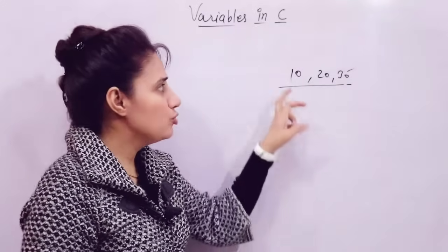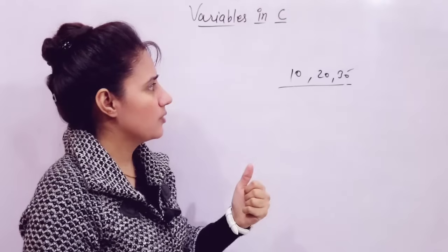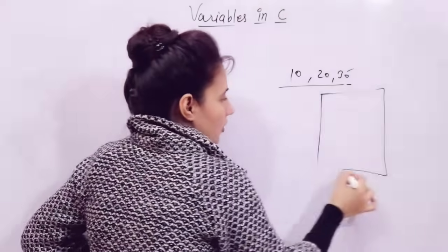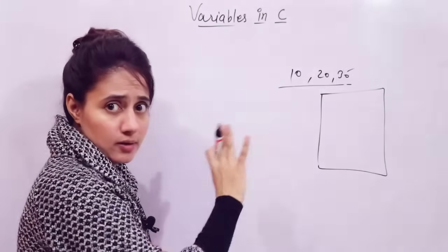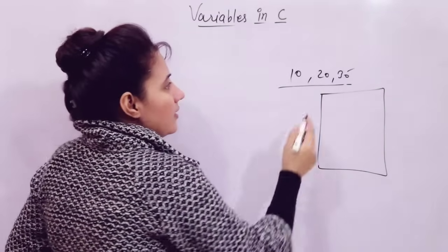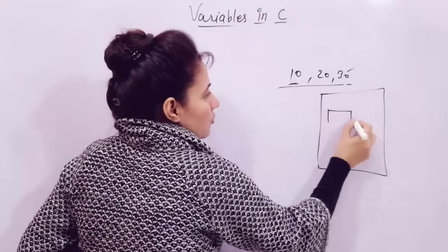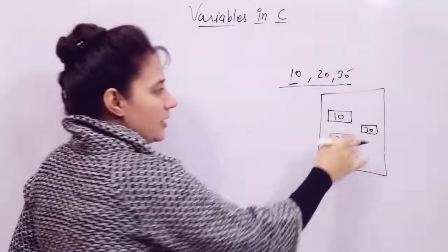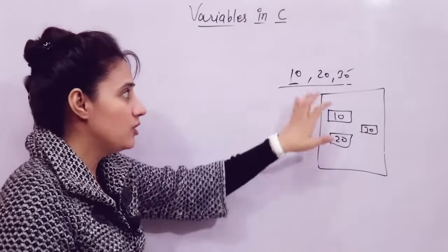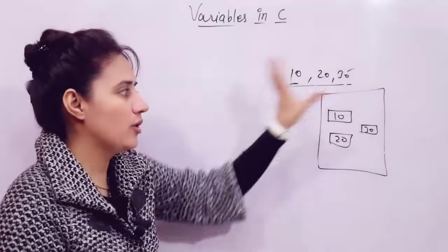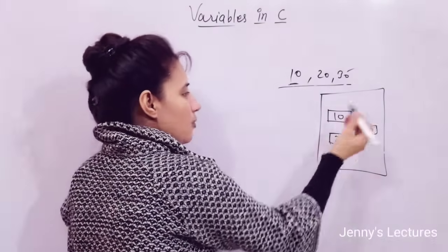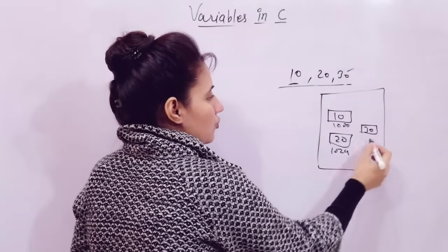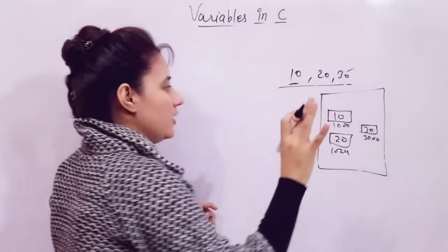To store these numbers or to store some values, you need a variable name. Suppose this is the computer memory — a chunk of memory. If I want to store 10, I have stored 10 here, 20 here, 30 here — at any random locations in computer memory. These numbers will be stored at random locations and these locations have some addresses, suppose address 1000, 1024, and 3000.